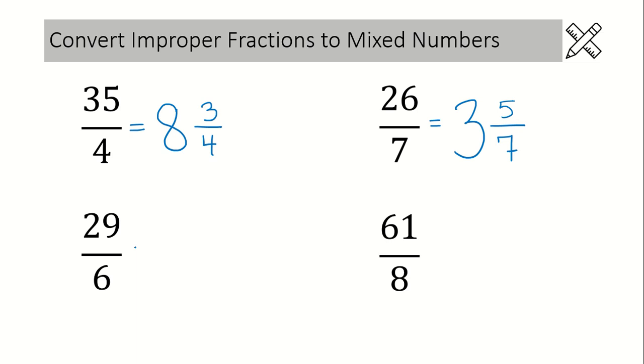A couple more examples here. Let's leave a space for our whole number and put in a denominator of 6. Okay, how many times does 6 go into 29 without going over? That would be 4 times. 6 times 4 is 24, plus 5 makes 29.